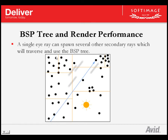BSP-Tree and render performance. During a render, there are many rays that are going to involve the BSP-Tree. For example, a single ray is cast in the scene, it may hit a surface, and that surface will call the material installed on that given triangle. This material can spawn many other secondary rays — for example, if the triangle has a glossy reflection material, it will spawn many rays in the scene, and every one of these rays is going to involve the BSP-Tree.